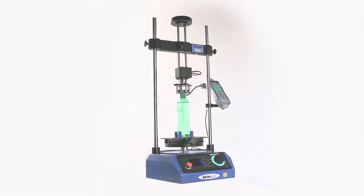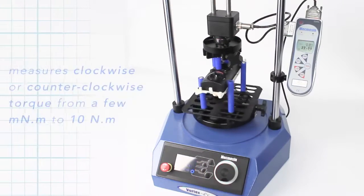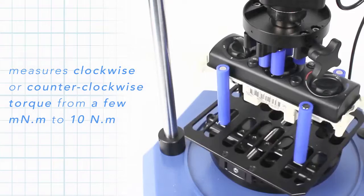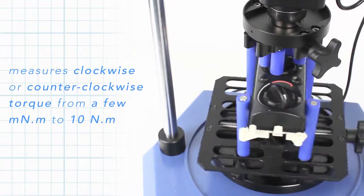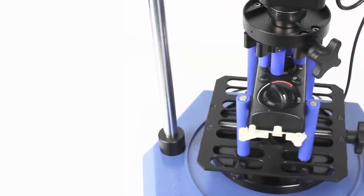Vortex DV measures clockwise or counterclockwise torque, covering the range from a few millinewton-meters right up to 10 newton-meters, ideal for many applications involving small rotary mechanisms.